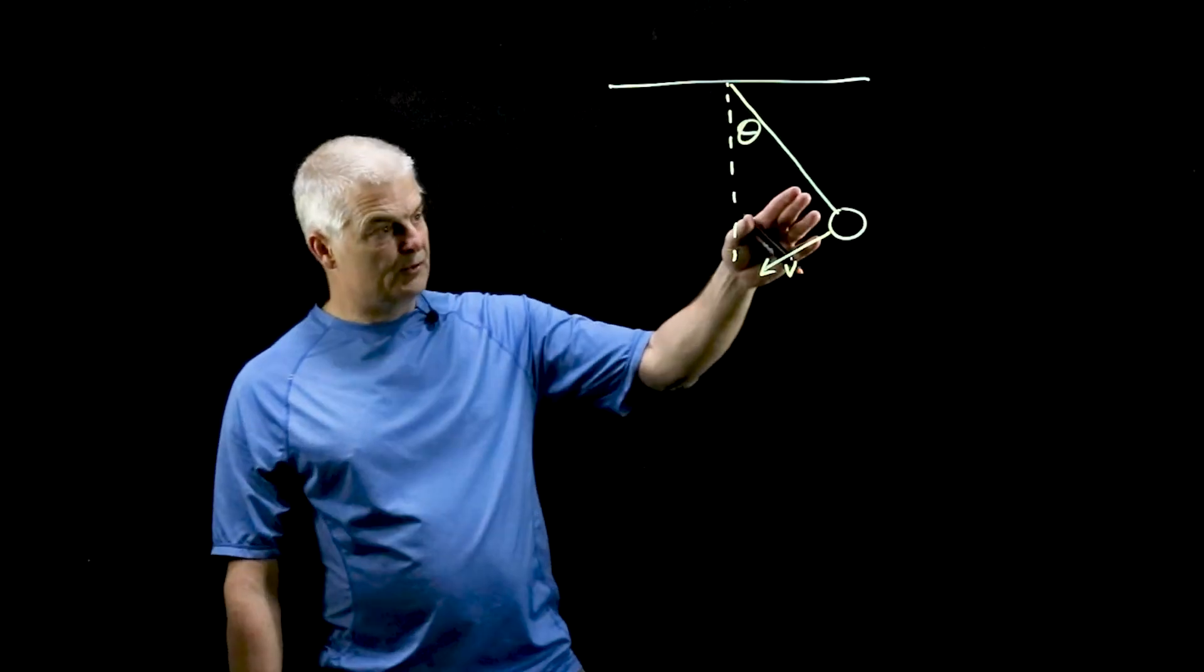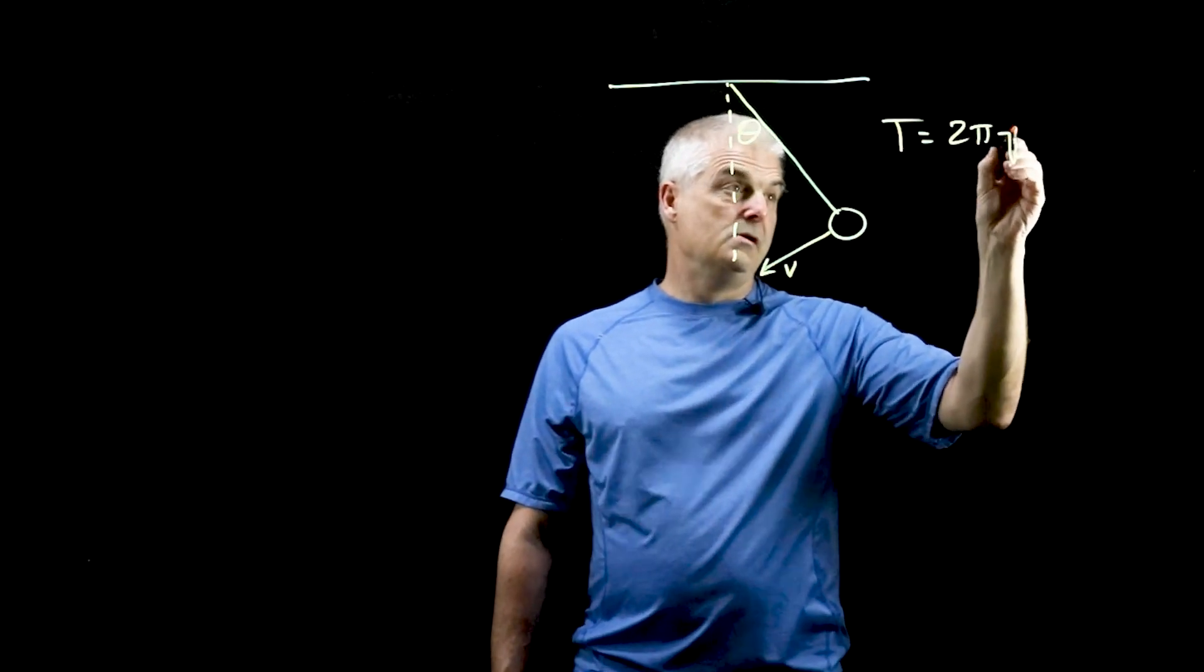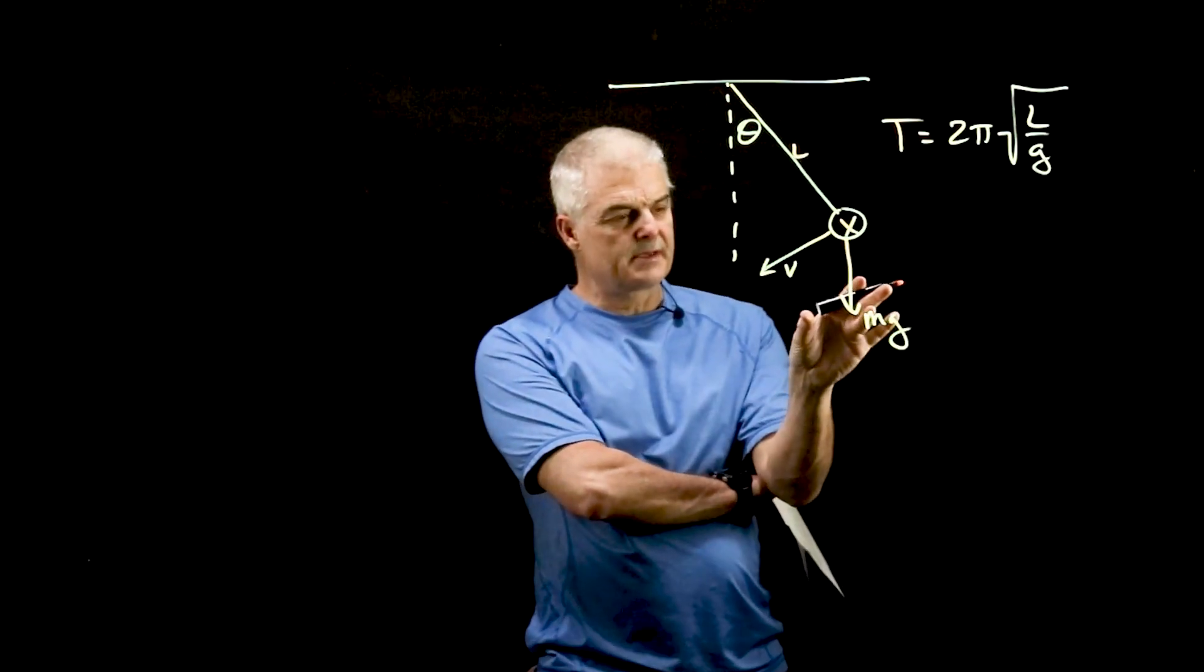So we've got our pendulum, and it moves back and forth and back and forth. And if you recall the equation, so there's an interesting question. If you were to increase the mass of the bob, would it go faster?